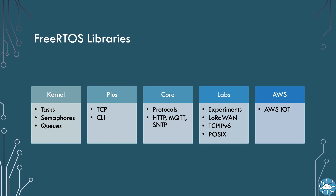FreeRTOS Core also provides MQTT for IoT, and SNTP for date and time services. FreeRTOS Lab is a more experimental set of libraries, looking at LoRaWAN — a wireless low bandwidth but large distributed network communication protocol — TCP IPv6, the successor of the traditional TCP/IP protocol, and POSIX, a full Unix library capability.